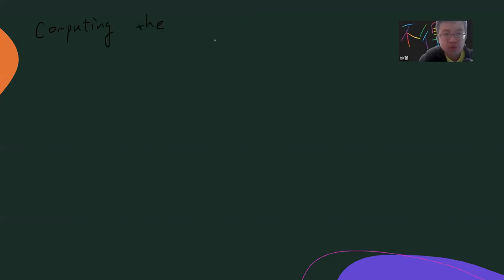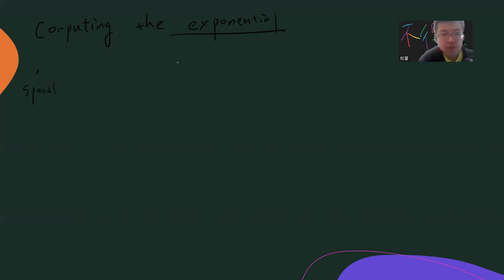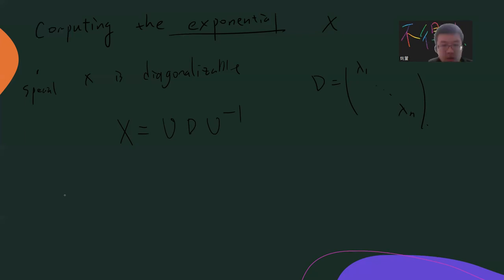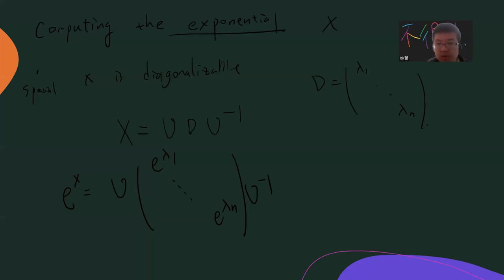Now, how does one actually compute the matrix exponential in general? Special case one: if X is diagonalizable. This is trivial — write X = U D U⁻¹ where U is some matrix and D is diagonal with entries λ₁, …, λₙ. Then exp(X) = U · diag(e^{λ₁}, …, e^{λₙ}) · U⁻¹.